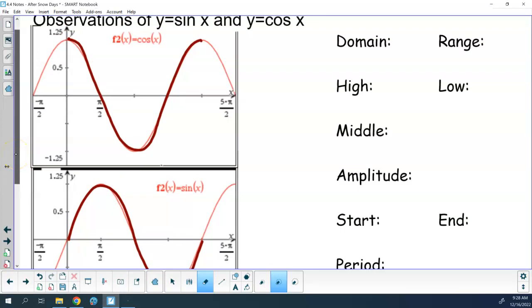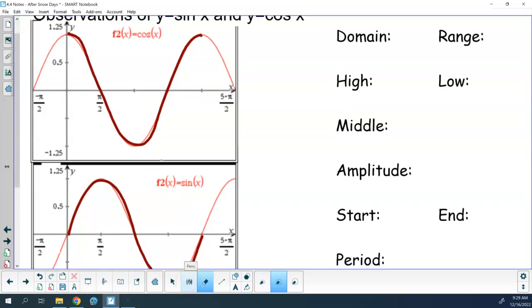Now, what you should have found out on Wednesday is that the domain of both of them is always all real numbers. That's the easy one. Because for sine and cosine, it's always going to be all real numbers because you're never dividing by zero. On the other four, you have the opportunity to divide by zero. So the other four have restrictions in the domain. But sines and cosines don't.